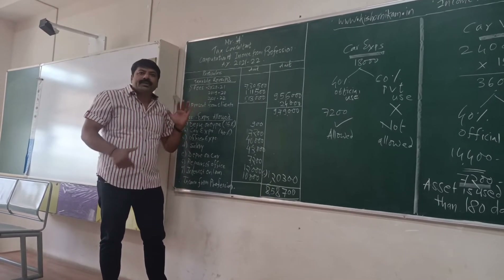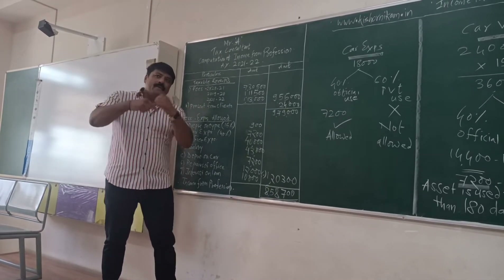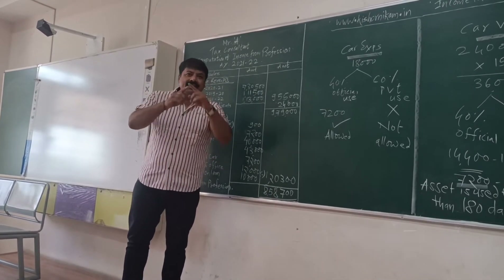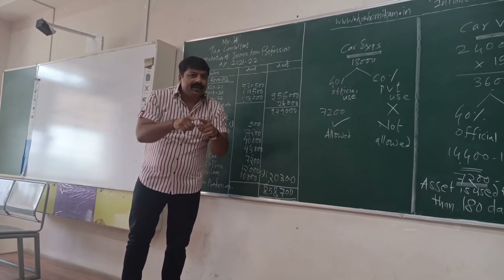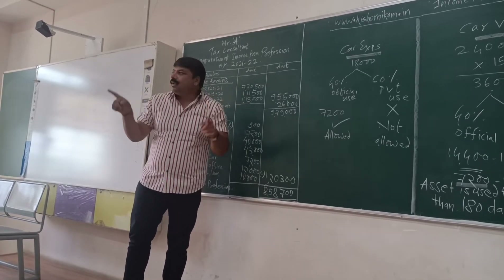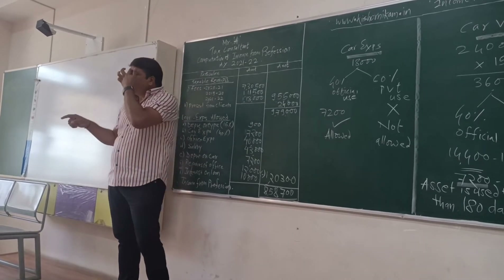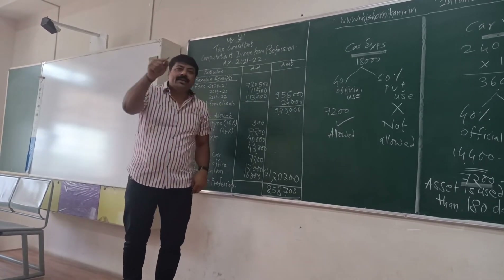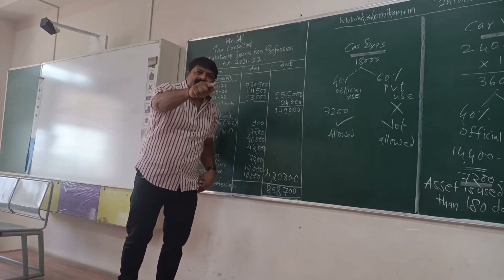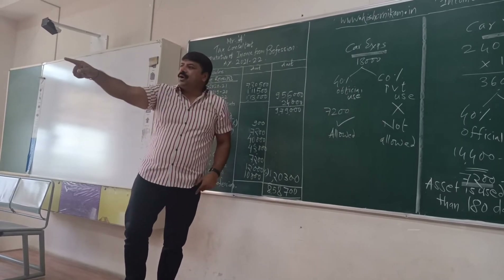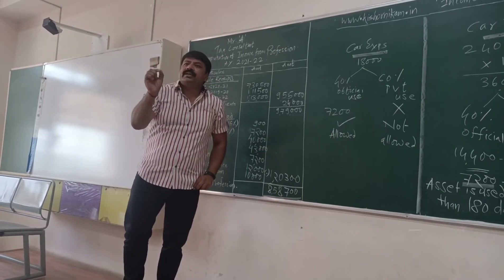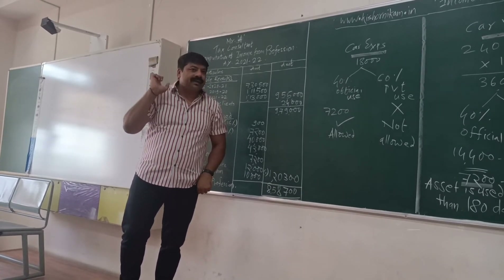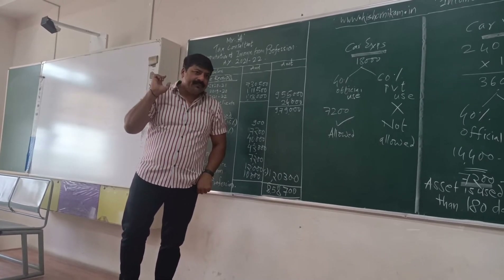So total income from profession after deducting 1,20,300 from 9,79,000 comes to 8,58,700. This is income from profession. Now you have to add income from house property as well as income from other sources, like winning from lottery and interest on Unit Trust of India investment.